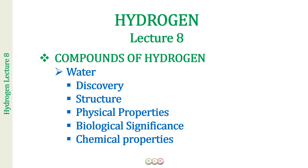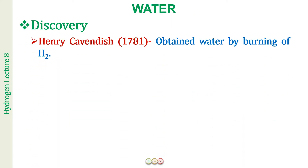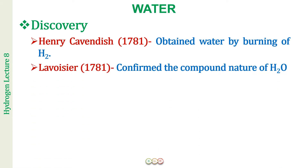Let us start with the discovery of water. It was Henry Cavendish who in the year 1781 obtained water by burning of hydrogen. He studied the properties of hydrogen and found that when hydrogen burns in air, it results in the production of water: H2 + O2 → H2O. After that, Lavoisier in the year 1791 confirmed the compound nature of water — that water is not an element but a compound made up of hydrogen and oxygen.